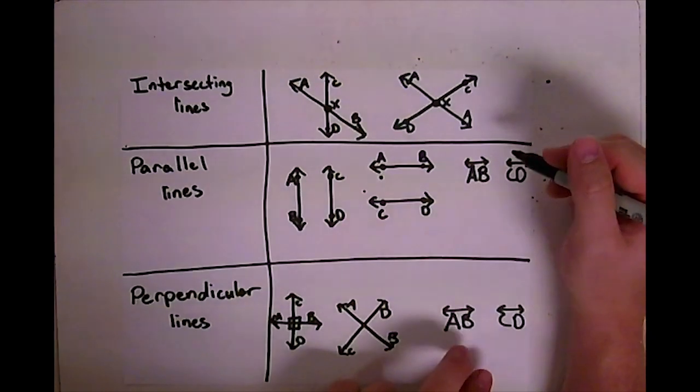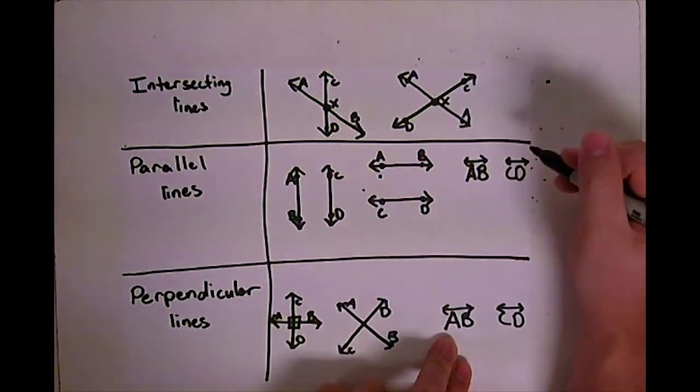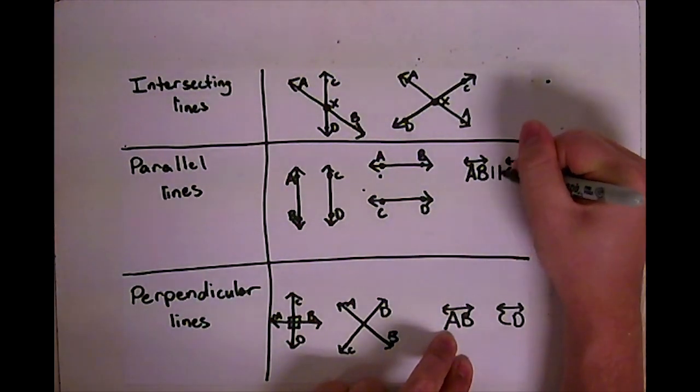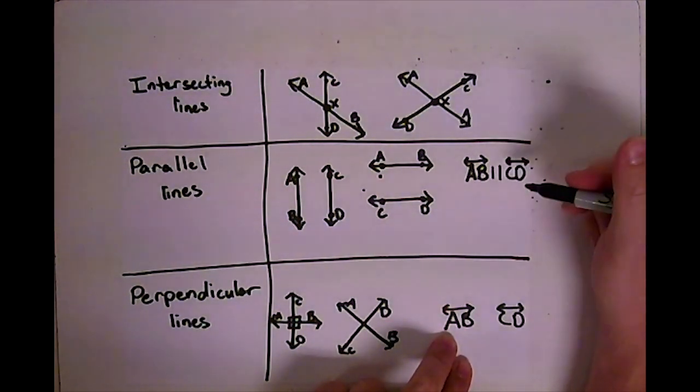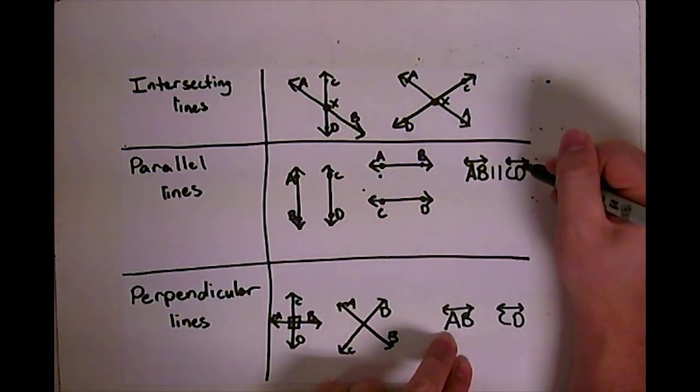And the way that they're going to tell you that they're parallel lines is they're gonna say line AB, and remember that rule with our line, is parallel. And I just draw two little vertical parallel lines to show you that they're parallel. Line AB is parallel to line CD.